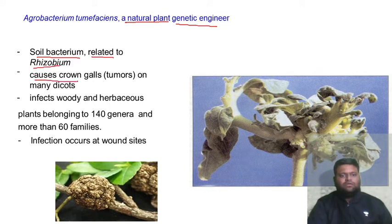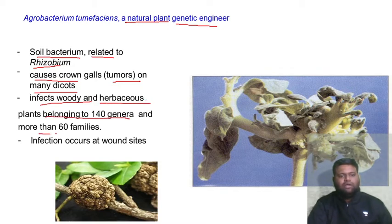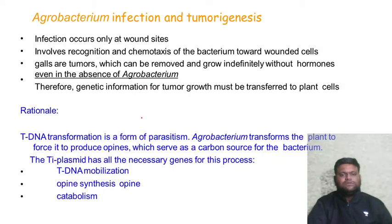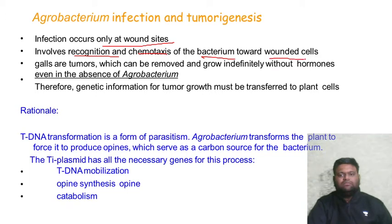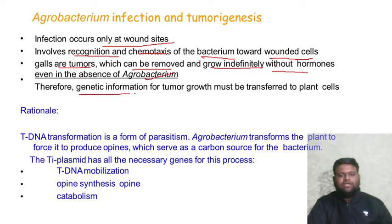Agrobacterium tumefaciens causes crown galls on many dicots and infects woody and herbaceous plants belonging to 140 genera and more than 60 families. Infection occurs at wound sites. Agrobacterium infection and tumorigenesis involve recognition and chemotaxis of the bacterium towards wounded cells. Galls are tumors which can be removed and grow indefinitely without hormones, even in the absence of Agrobacterium. Therefore, the genetic information for tumor growth must be transferred to the plant cell.